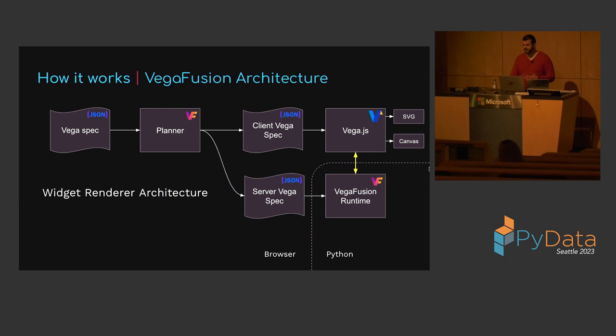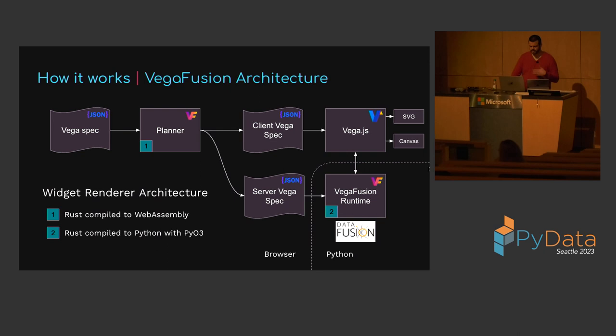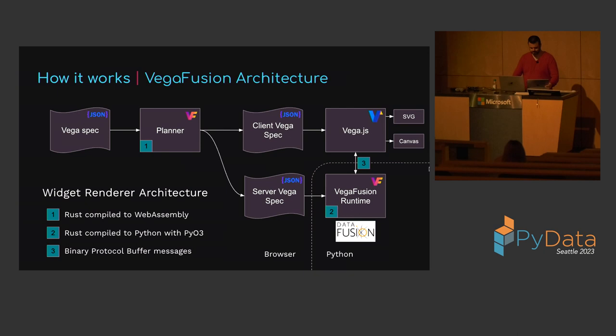For interactive charts using the widget renderer, messages are sent back and forth between Vega and the VegaFusion runtime to maintain interactivity. Both the planner and the runtime are written in Rust. In the widget renderer case, the planner is compiled to WebAssembly to run in the browser. The runtime implements Vega's data transformations using the Apache Arrow DataFusion library, a Rust library compiled to Python using PyO3. The messages exchanged between the runtime and the client are in binary protocol buffer format and take advantage of Apache Arrow for serializing dataframes.